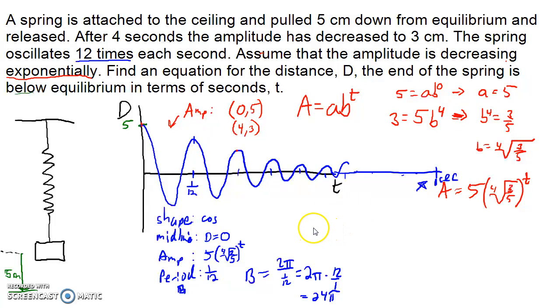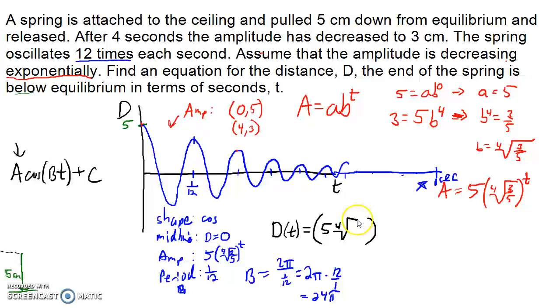So now that we have all the pieces we need to write this equation. So let's go ahead and write our final equation here. So D in terms of t. Now remember an equation for a cosine function, it's usually amplitude times the cosine function. So instead of our usual, let me make some room here, instead of our usual, you know, A cos(bt) plus the midline, instead of the usual constant here, we're going to be putting in this function.